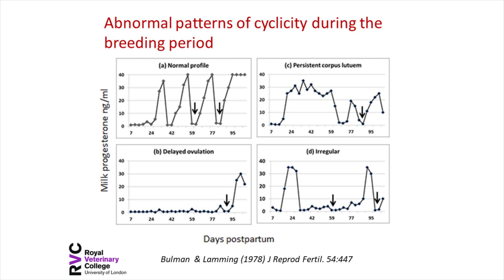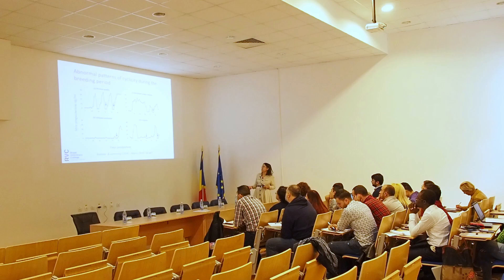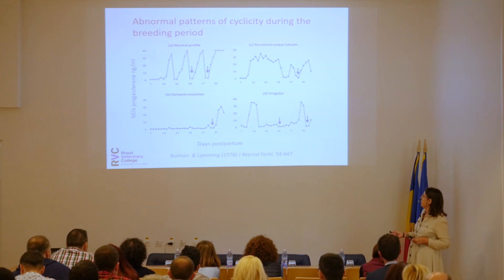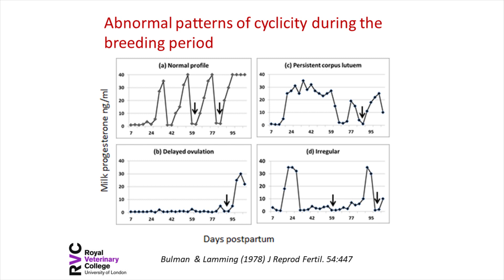Looking at what's happening during lactation using milk progesterone profiles: progesterone from the corpus luteum is secreted into the bloodstream and measurable in milk — known since the 1970s as a reliable way of monitoring oestrus cycles. Ideally the cow starts cycling within three or four weeks of calving, has two or three regular cycles, is inseminated, and conceives, with progesterone remaining high. However, many cows don't do this — you get delayed ovulation, persistent corpus luteum where the CL doesn't regress after 21 days, and various irregular patterns.